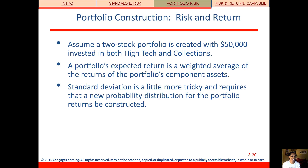We talked about standalone risk, now let's talk about portfolio risk. Before we do that, we're going to have to construct a portfolio. Let's assume a two-stock portfolio where we have a total of $50,000 in high-tech and another $50,000 in collections. The dollar amount really doesn't matter — it's just that we're 50-50 high-tech and collections.